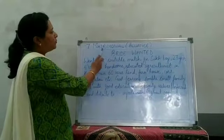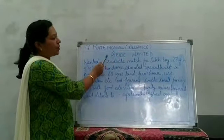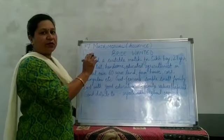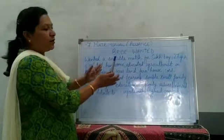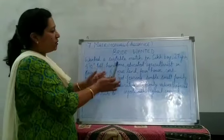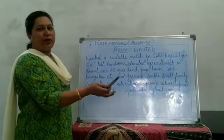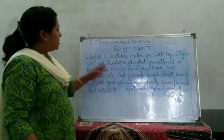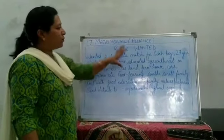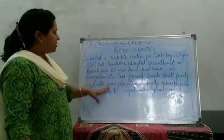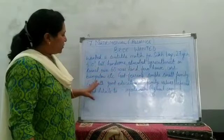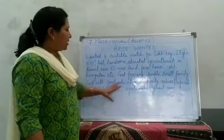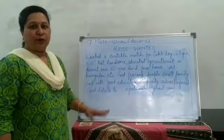The next example is Matrimonial Alliances — Bride Wanted. In the same way as the previous example gave details of the girl and what kind of boy the family was looking for, here, because the bride is needed, the details of the boy are given first, and then what kind of girl the family wants for the boy is mentioned in this example.